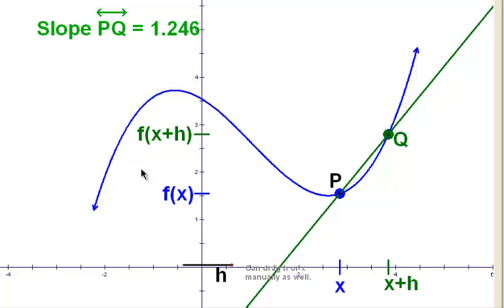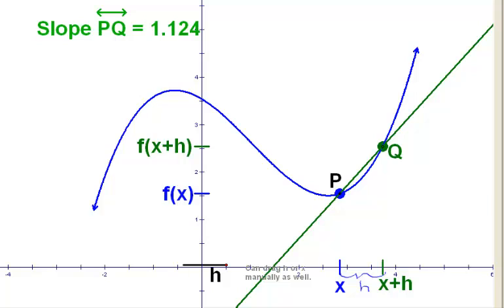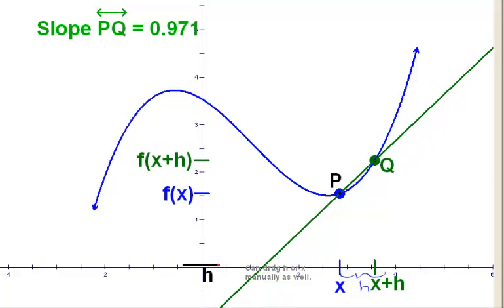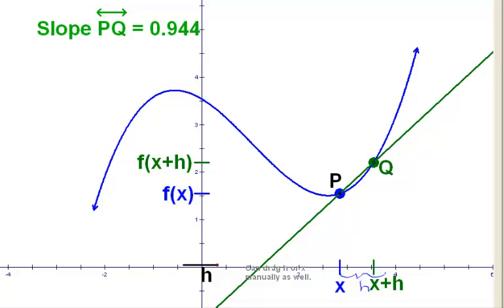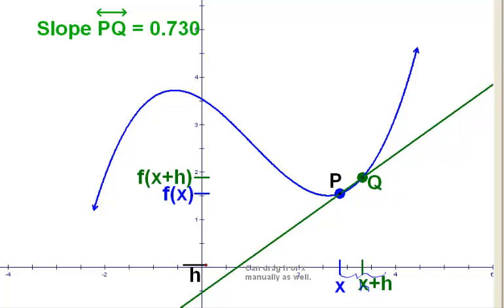So, what we're going to do is we're going to pick up this distance h, and we're going to make it go to zero. We are going to move the point Q closer to P. We're going to follow the curve. We still have secant lines all the way. As we move Q closer to P, we see that the slope of the secant line is changing because we have different data points.